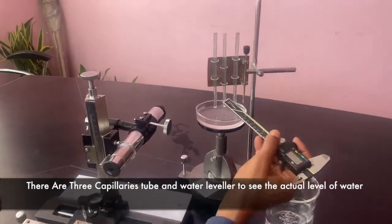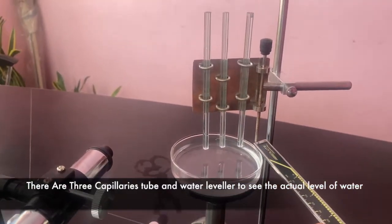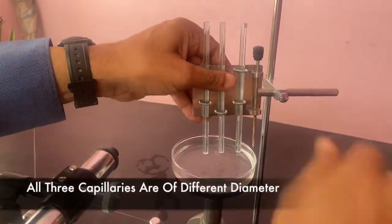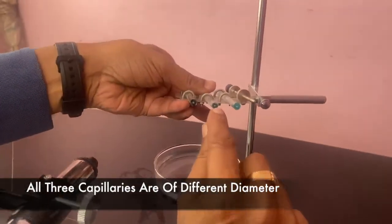There are three capillary tubes and a water leveler to see the actual level of water. All three capillaries are of different diameter.